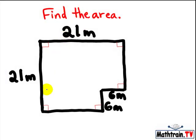Okay, we want to find the area. If this figure was a rectangle or a square, we could just do 21 meters times 21 meters and we'd be able to have our area because area is base times height for that rectangle.